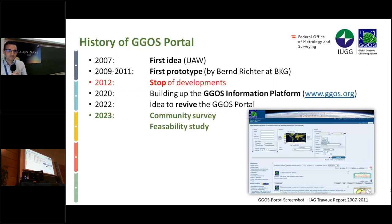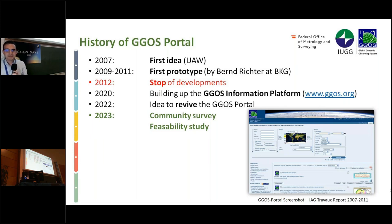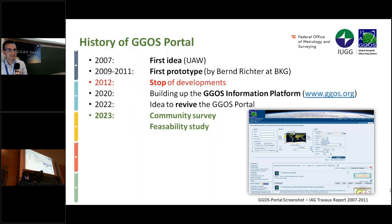Going into a bit more detail on the history: the first idea was in 2007 at the Unified Analysis Workshop, and a first prototype was produced by the PKG, Bernd Richter, and colleagues. Unfortunately, development was stopped in 2012. In 2020, we built up a new JIGOS website and integrated an information platform with easy-to-understand descriptions — that is one part of the original 2007 idea. Now it is up to us to combine this description portal with the JIGOS portal providing metadata.